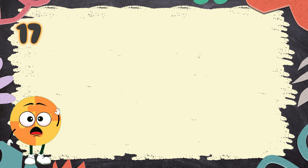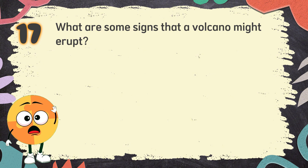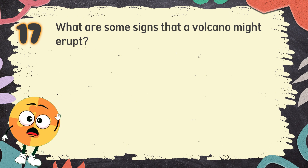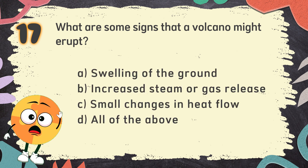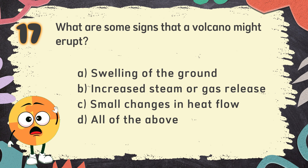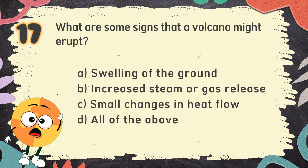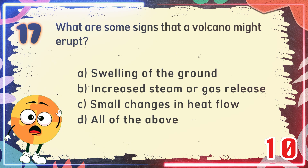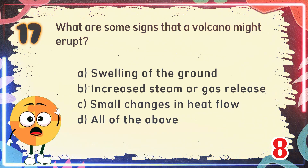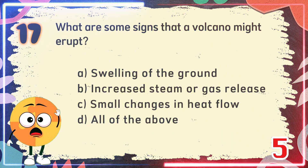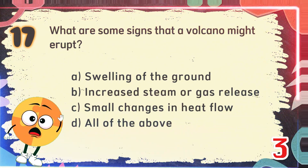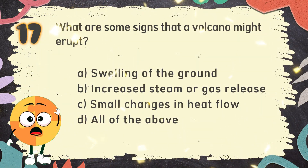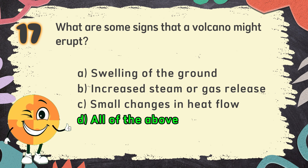Number 17. What are some signs that a volcano might erupt? The choices are: A. Swelling of the ground, B. Increased steam or gas release, C. Small changes in heat flow, D. All of the above. The correct answer is D. All of the above.